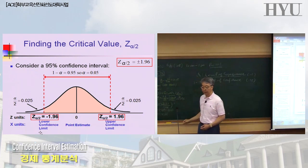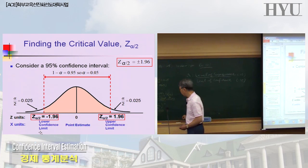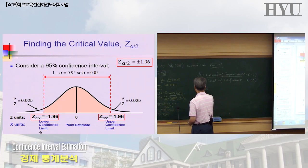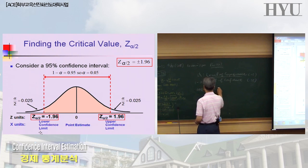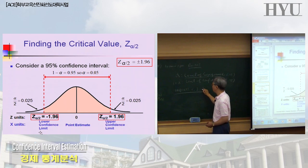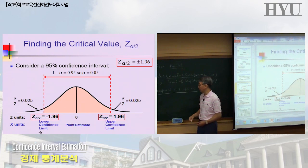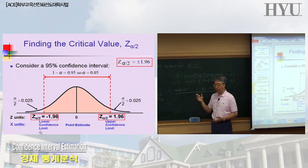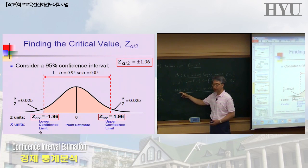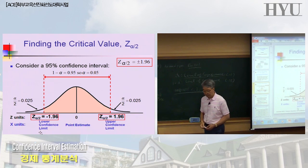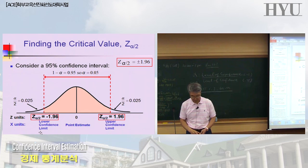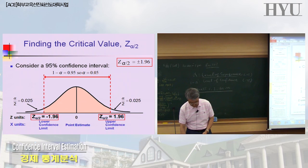We're looking for a 95% confidence interval, written as 100 times (1 minus alpha) percent confidence interval for mu. If you're looking for 95% confidence interval, that means the alpha level is 0.05, because 1 minus 0.05 times 100 equals 95. We first located the Z-score which has 0.025 on its outside.